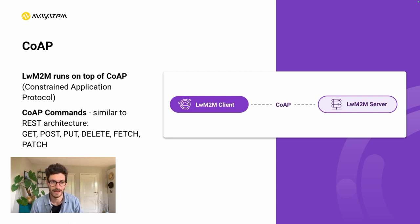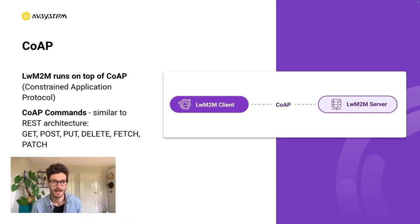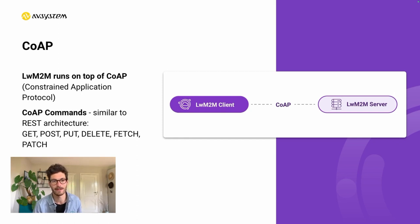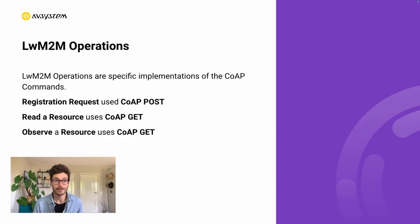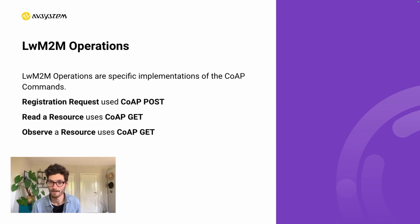CoAP is designed to be lightweight, using very little overhead due to the small header size. By default it uses UDP as the underlying transport protocol. Because UDP does not guarantee data delivery, CoAP provides message reliability mechanisms — for example, by allowing devices to send unconfirmed or confirmed messages. Confirmed messages need to be acknowledged by the receiver, which improves the reliability of the data transfer. Lightweight M2M uses these CoAP commands for managing IoT devices and their data.